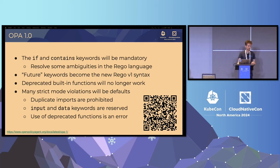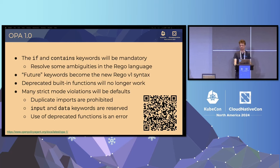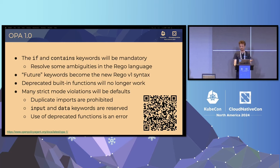What are the main updates in OPA 1.0? There's a new syntax centered around new keywords. You'll see things like 'allow if' or a rule which uses 'contains' — the 'if' and 'contains' keywords in particular are the two most obvious new additions. These will become the new default syntax. Other important updates are that deprecated built-in functions will no longer work, and many of the strict mode checks — which you can currently check for with the OPA check command — will become required by default.